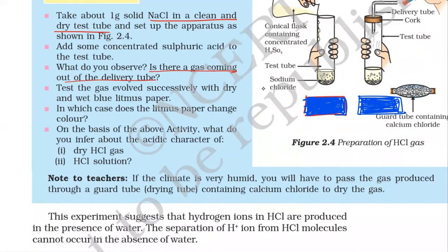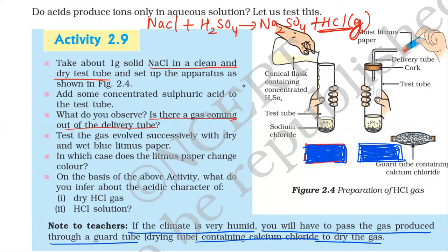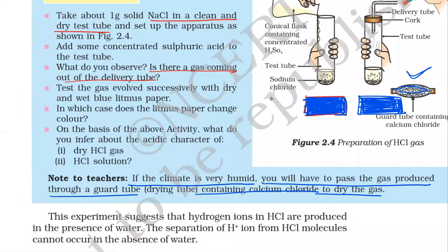Here one note is given: if the climate is very humid, meaning enough moisture is present, then you will have to pass the gas produced through a guard tube containing calcium chloride to dry the gas. Basically, HCl gas is evolving, and if it combines with moisture, it will already come in contact with moisture and our results will not be appropriate. So, in case enough moisture is present in the atmosphere, we should pass the gas through a guard tube containing calcium chloride, which will absorb the water molecules.